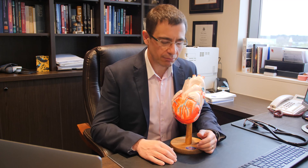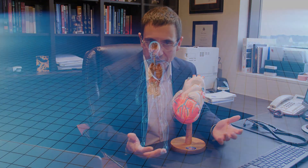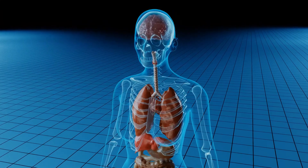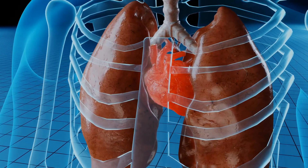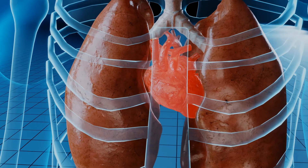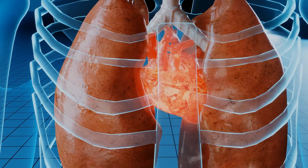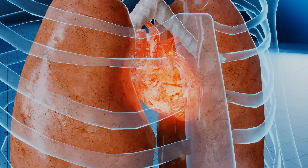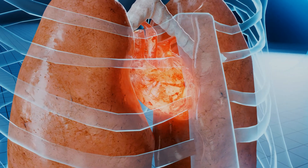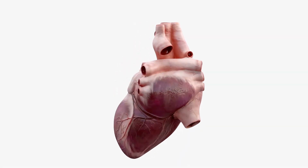So our model here of the heart. Essentially the heart is a muscle that pumps and delivers oxygenated blood around our body. The heart muscle itself is contracting 70 times per minute. I like to divide the heart into three main aspects — one being the heart muscle itself, which is the pumping chamber of the heart that expels the blood.